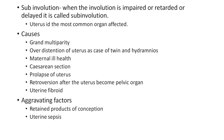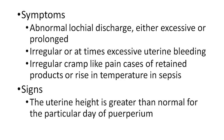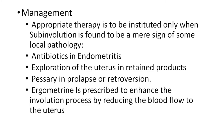Sub-involution: when involution is impaired, retarded, or delayed, it is known as sub-involution, and the uterus is the most commonly affected organ. Causes include grand-multiparity, overdistension of the uterus, twin pregnancy, hydramnios, maternal ill-health, prolapse of the uterus, retroversion, and uterine fibroids. Aggravating factors include retained products of conception and uterine sepsis. Symptoms include abnormal lochia either excessive or prolonged, irregular or excessive uterine bleeding, crampy pain, and rise of temperature in sepsis. Management: antibiotics for endometritis, exploration of uterus for retained products, pessary for prolapse or retroversion, and ergometrine to enhance involution by reducing blood flow to the uterus.